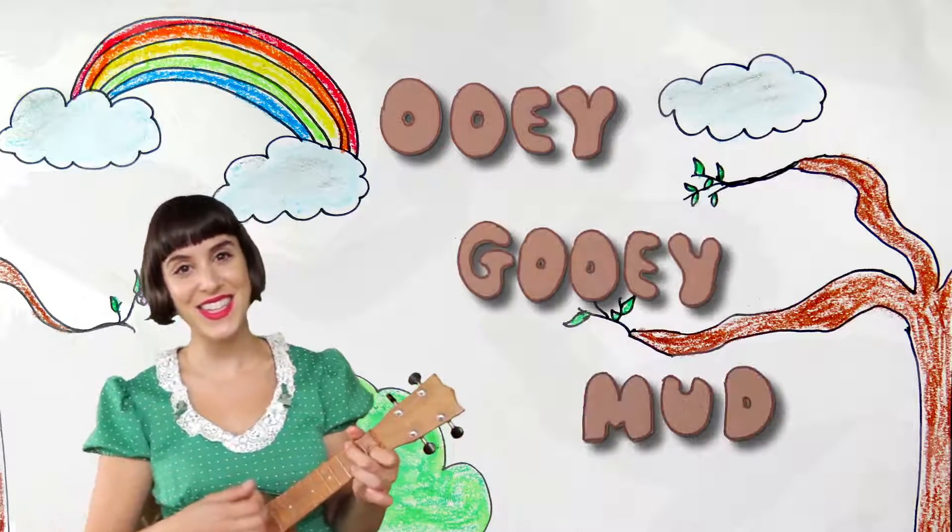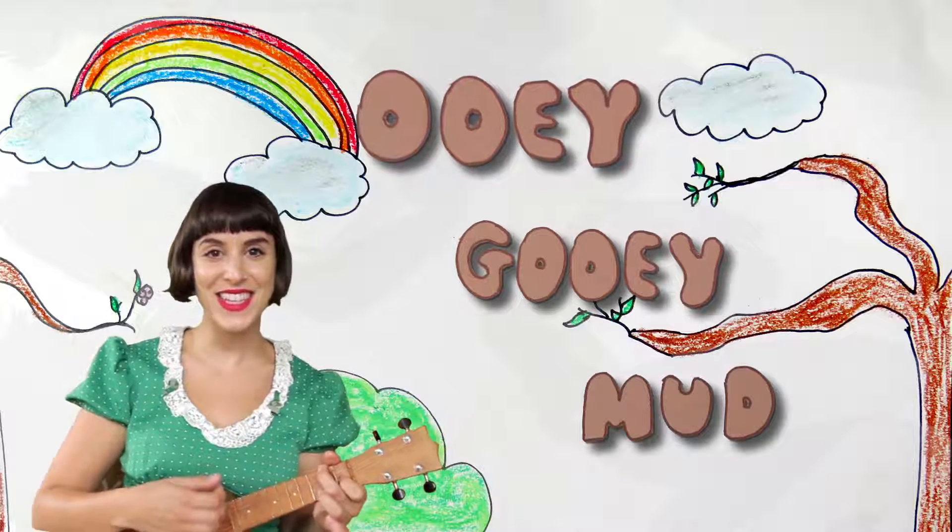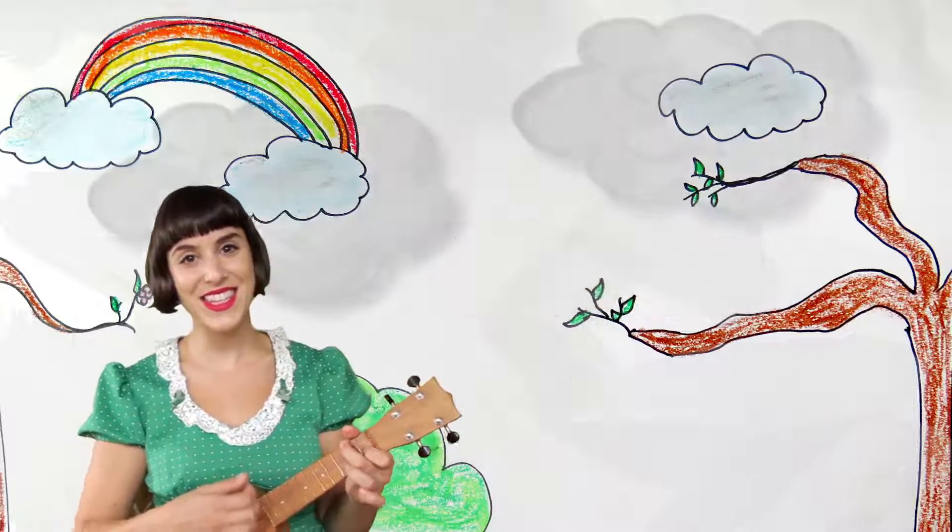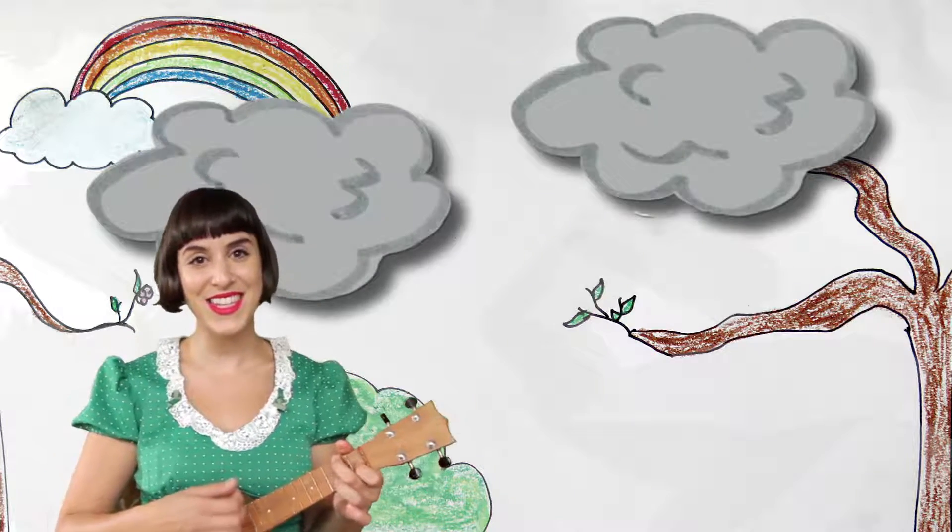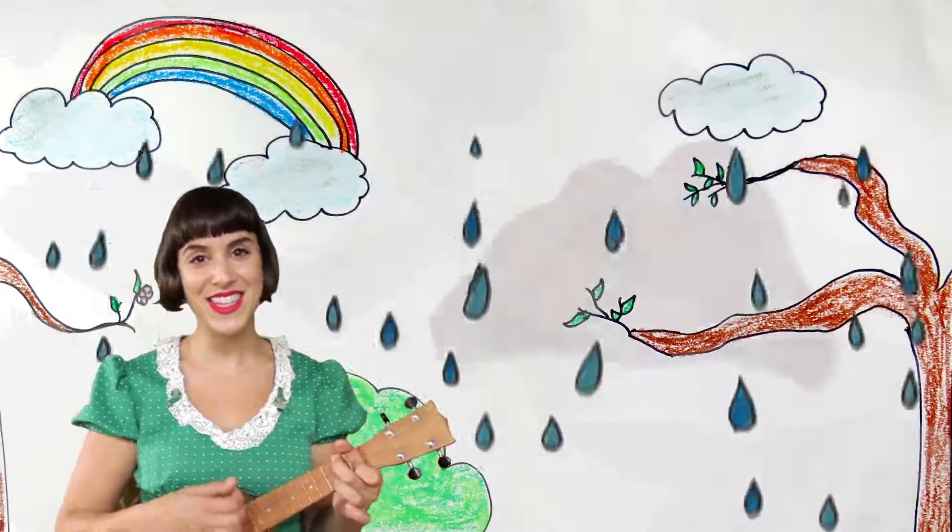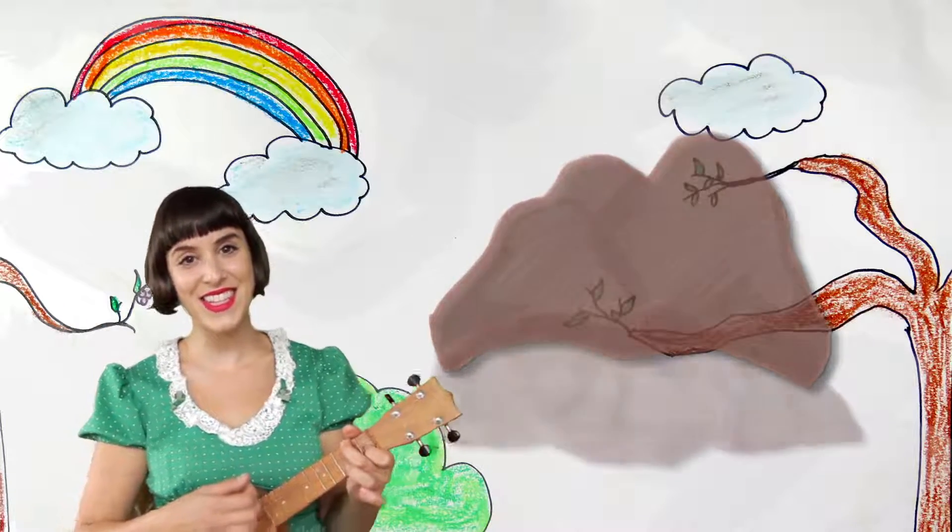Ooey gooey mud. Ooey gooey mud. Even though it's gray out, it's not hot mud because the rain turned the dirt into ooey gooey mud.